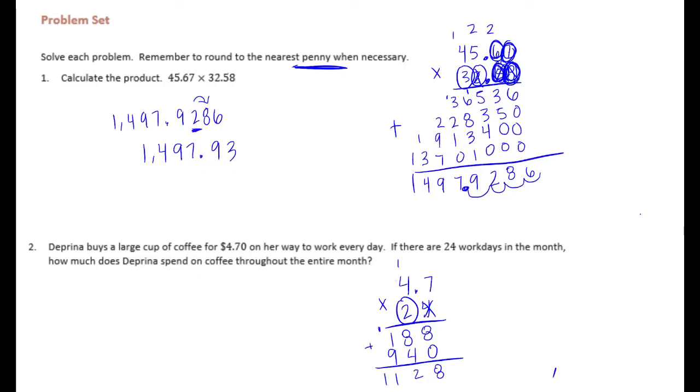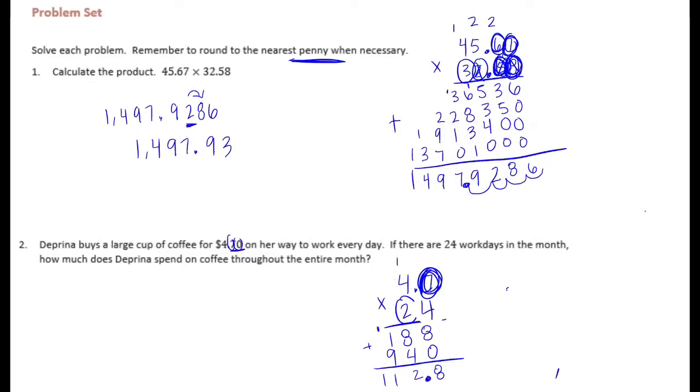We only had 1 digit behind the decimal point, so I only need to move it one place. She spends $112.80 a month on coffee.